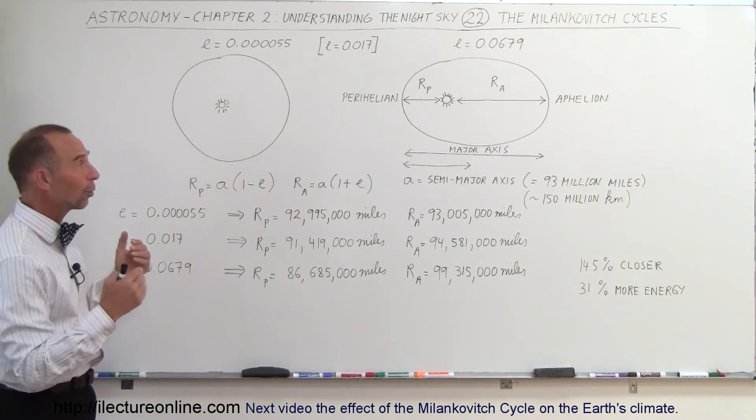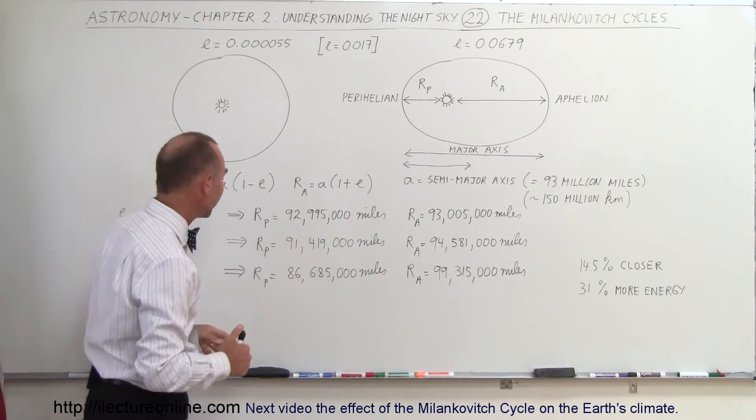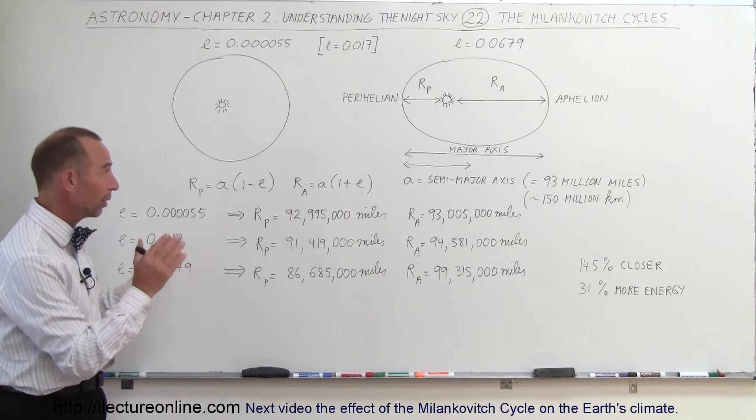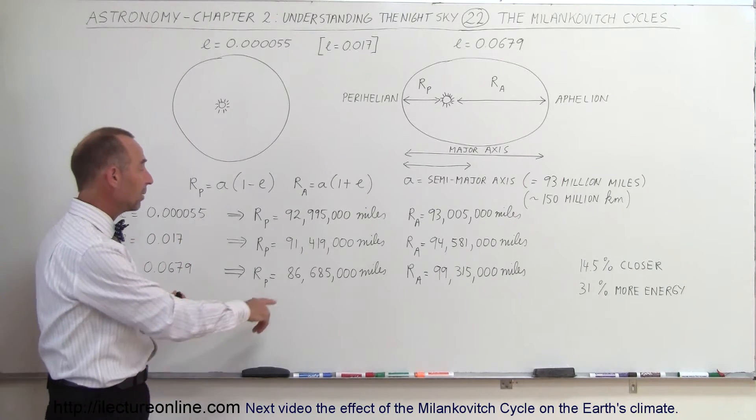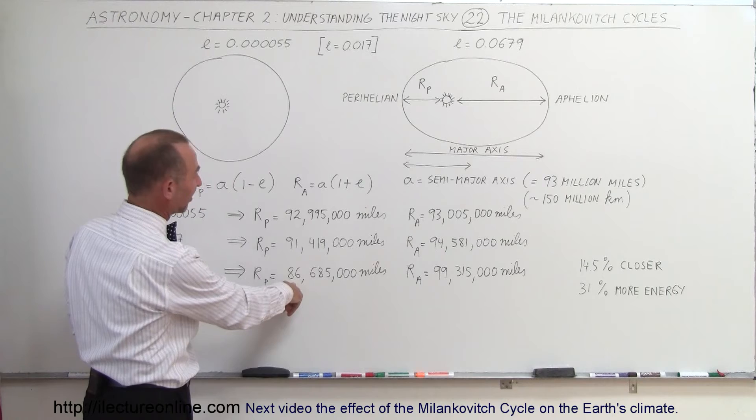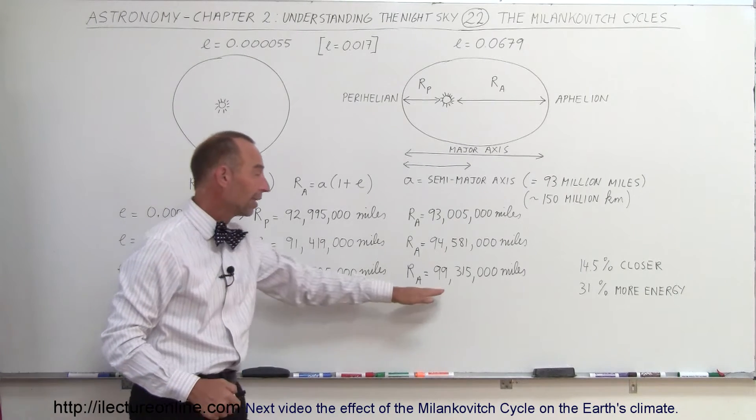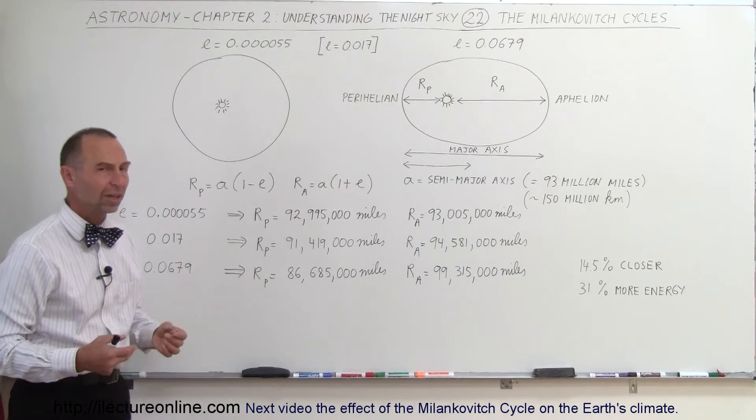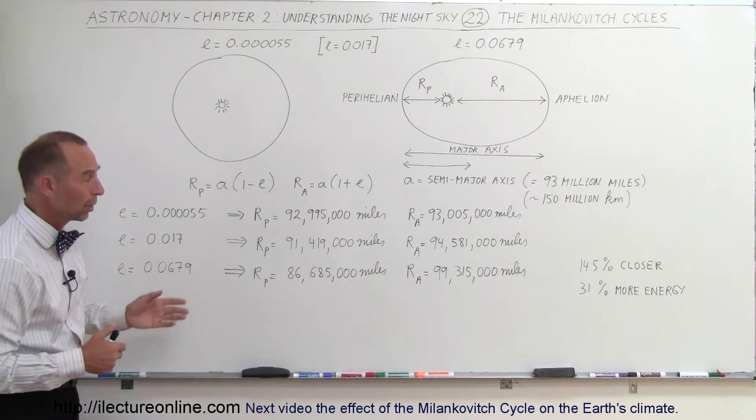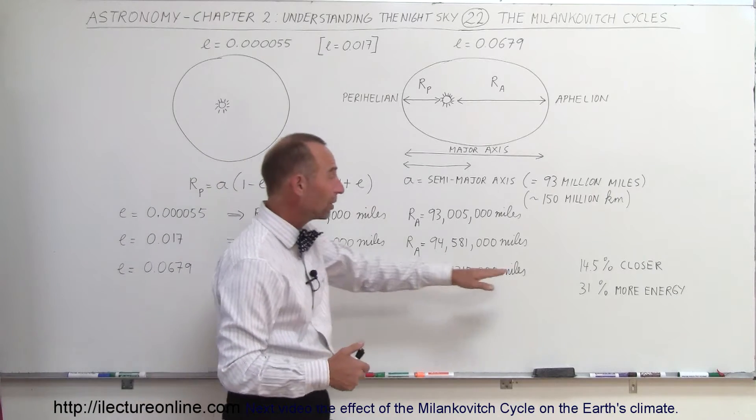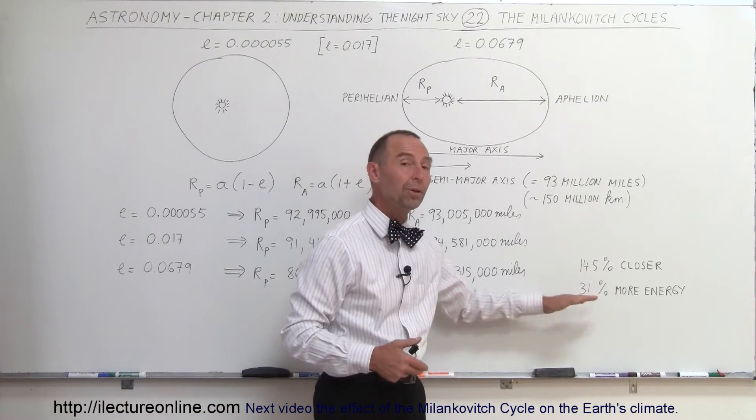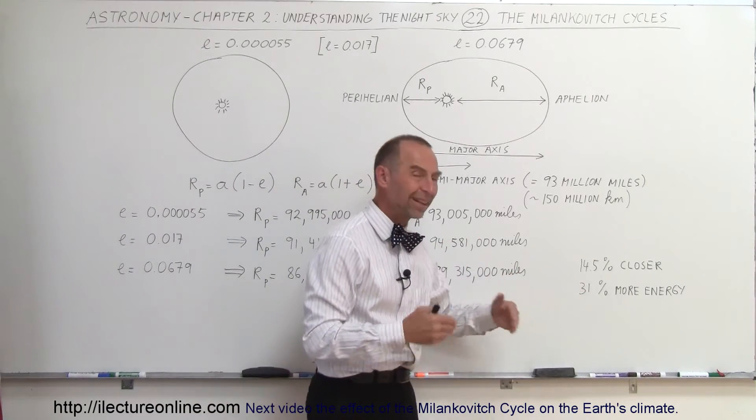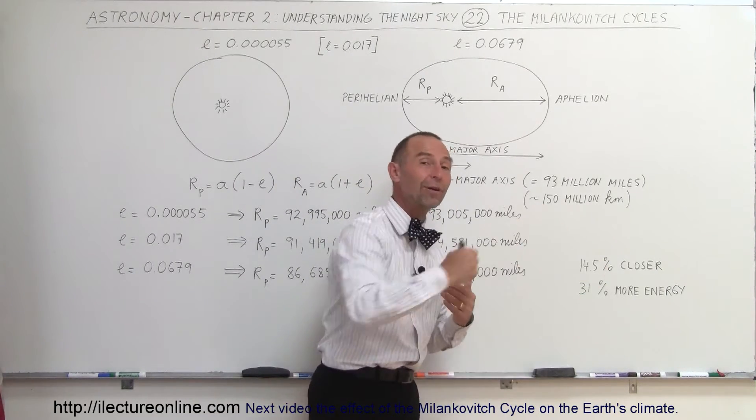But there are times when the orbit changes to such an extent that the distance will be enormously larger or smaller, depending upon what part of the orbit we're at. So it can be as much as more than 6 million miles closer or more than 6 million miles farther away from the Sun than the average distance. That will have a tremendous effect on the climate of the Earth. Notice that it's 14.5% closer, meaning we will be receiving 31% more energy when we're closer to the Sun, and 31% less energy when we're much farther away from the Sun.